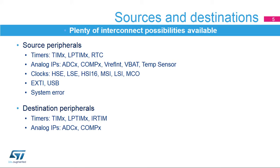The main peripherals having direct autonomous interconnections are timers, analog IPs, clocks, extended interrupt and event controller, digital filters for sigma-delta modulators, USB, and system error for the connection sources, and timers and analog IPs for the connection destinations.